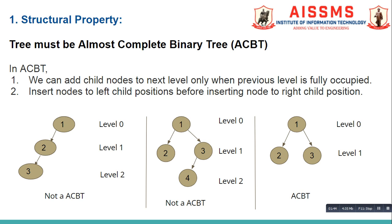In the second figure, nodes at level 1 are inserted appropriately, but at level 2, instead of occupying the left child position of node 2 first, node 4 is directly inserted as a child of node 3. So the second rule of ACBT is violated, therefore this is also not a heap tree.